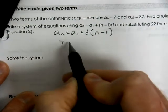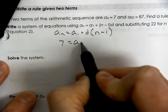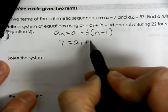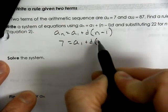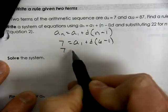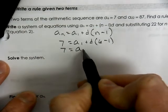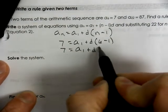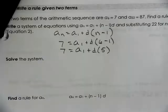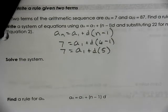So we're going to plug in the 7. We don't know the first term. We don't know the difference. But we do know it's the 6th term. So we're coming up with 7 equals a of 1 plus d times 5. That's the best we can do.